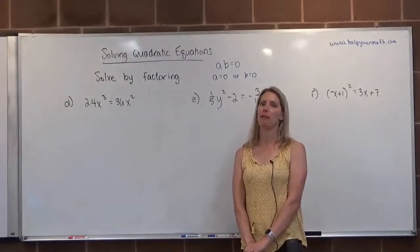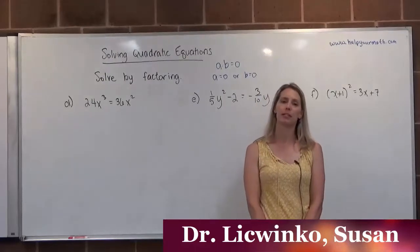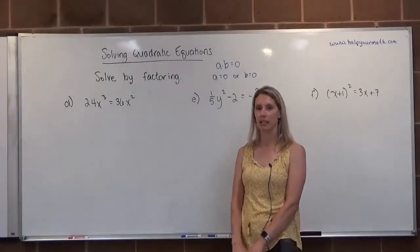This is a continuation of solving by factoring. In letter D we have 24x cubed equals 36x squared. When we're solving by factoring we need to set it equal to zero.